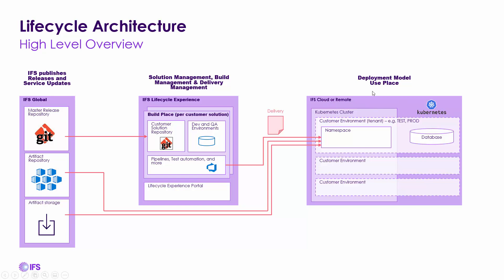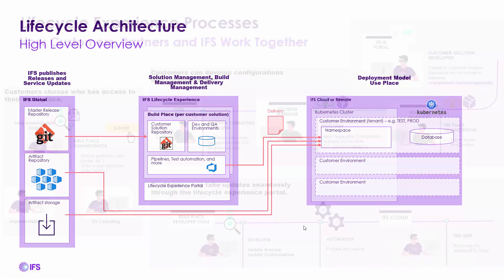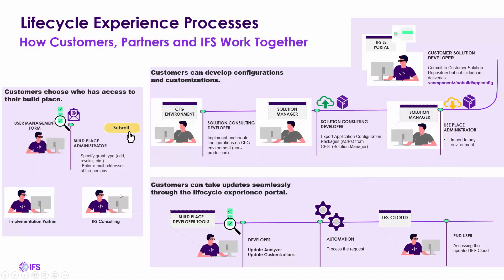There are pipelines, test automation, and more delivered in the build place. The lifecycle experience portal is how you administer and hold it all together. The use place is where the actual system resides — either in IFS Cloud Services or remote/on-premise — where IFS deploys Kubernetes clusters, namespaces, the database. You can have multiple environments.